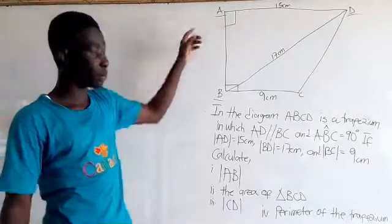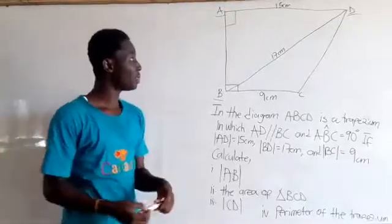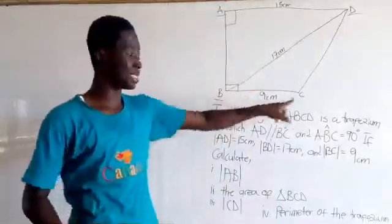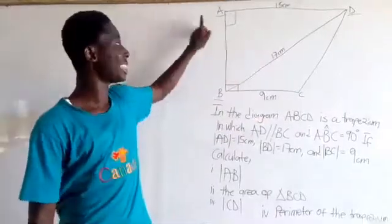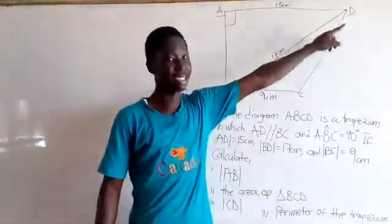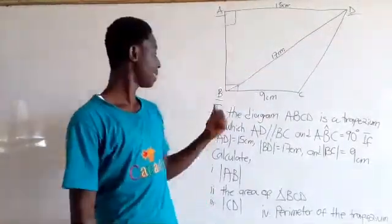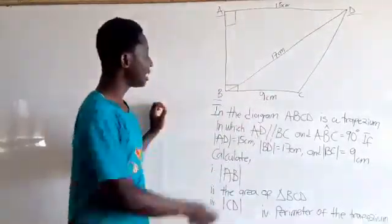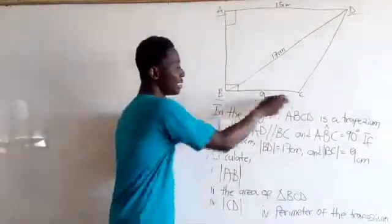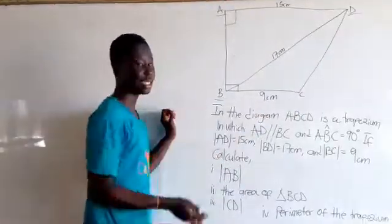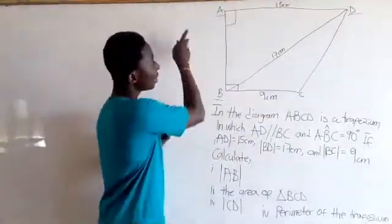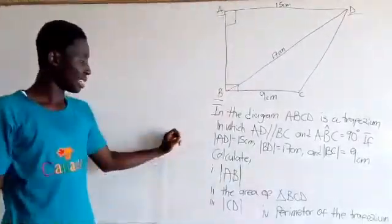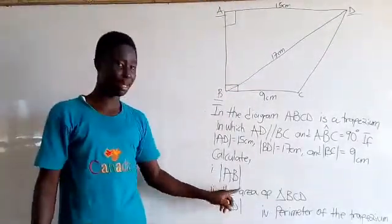We have a trapezium with AD parallel to BC, where AD is equal to 15cm, BD is equal to 17cm, BC is equal to 9cm, and angle BAD is 90 degrees. We are asked to find line AB.